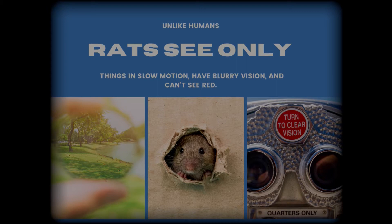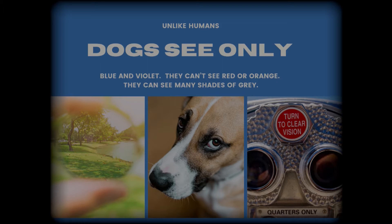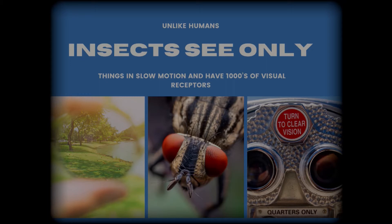Rats see things in slow motion. Their vision is blurry and they can't see red. Dogs see only blue, violet, and many shades of gray. Insects have thousands of visual receptors and only see things in slow motion.